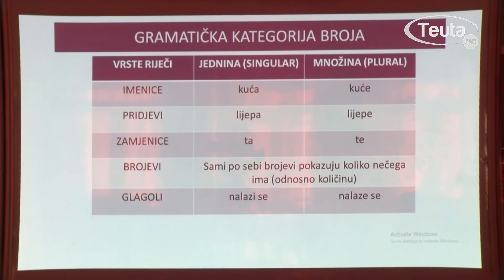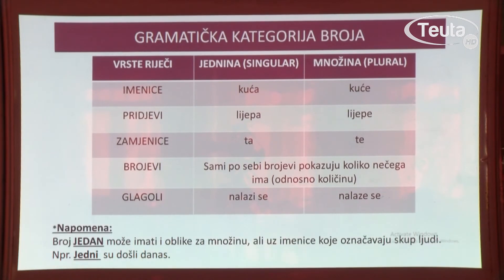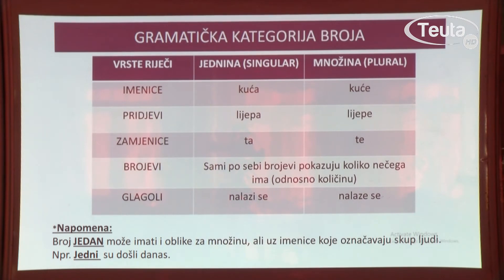Broj 1 može imati i oblike za množinu, ali to je rijetko i samo uz imenice koje označavaju skup ljudi. Na primjer: jedni su došli danas, a drugi će doći sutra. Ovaj oblik jedni je jedinstven primjer da broj 1 može imati oblik za množinu.